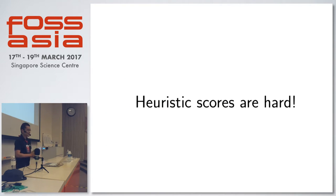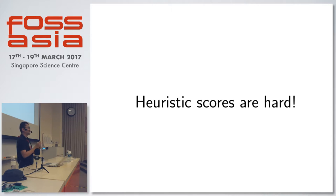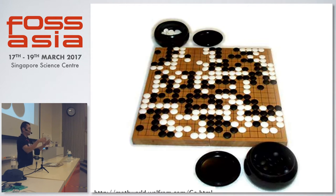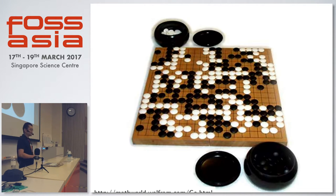Moving to a different game: Go. For some games it's very hard to even write a formula for the heuristic score. Chess is relatively easy; Go is much harder. In Go, played with black and white stones, the goal is to occupy territory. A small change in one part of the board can affect everything else — one piece connecting two army sections makes them much more powerful — so even experts can't always say who's winning mid-game.